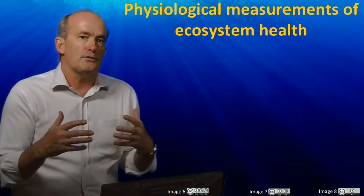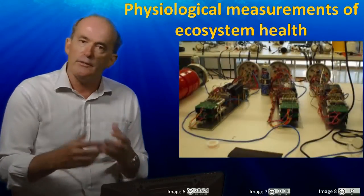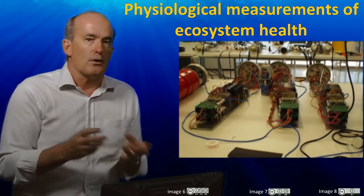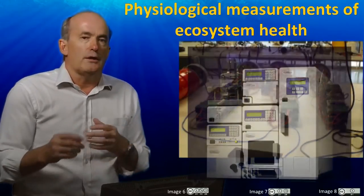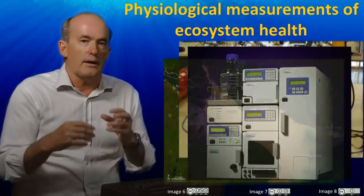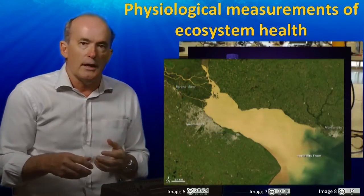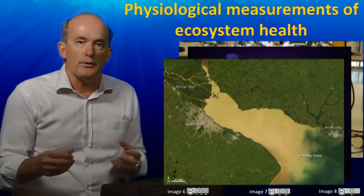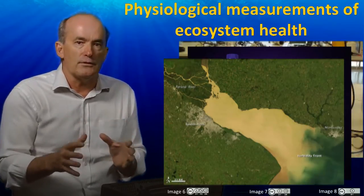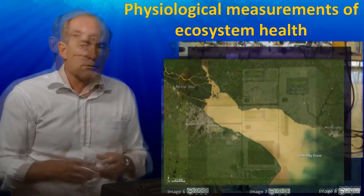Researchers may also take measurements of key chemical and physical variables such as temperature, chlorophyll, the amount of sediment in the water column, isotopic content, water clarity, toxins, and many other variables in order to understand how an ecosystem works and whether or not it's under stress.